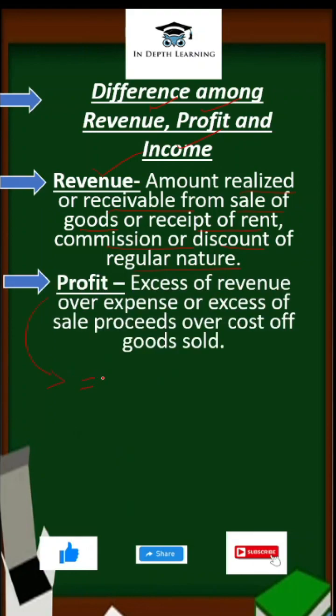We know that profit is equal to selling price minus cost price. Similarly, excess of revenue over expenses, or excess of sale proceeds over cost of goods sold, is known as profit.